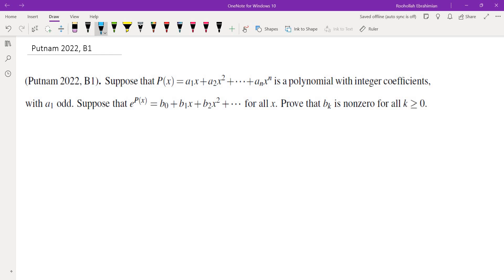It gives us a polynomial P(x) = a₁x + a₂x² + ... + aₙxⁿ, and it tells us that the coefficients are all integers and the linear coefficient a₁ is odd. Then it asks you to show that if you write down the power series for e to the power of P(x) centered at zero, all of the coefficients bₖ are nonzero.